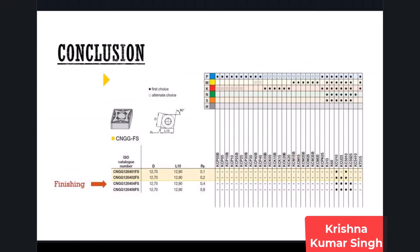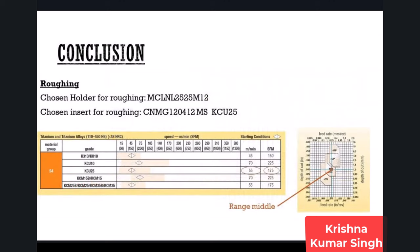Finishing inserts generate cutting forces and vibrations, so caution is needed. Now let's talk about cutting data. These operations will be performed on a CNC lathe using G96, or constant surface cutting speed. We will also define feed in mm per revolution. The catalog provides tables showing surface cutting speed, depth of cut, and feed.